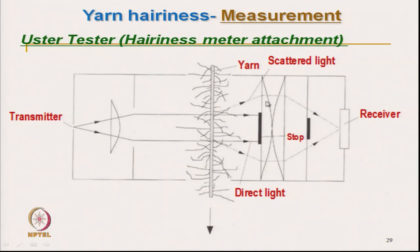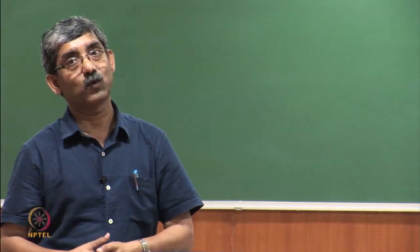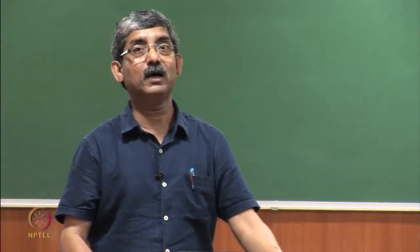The size of the block is equal to or slightly larger than the diameter of the aperture. If hairs are present, the hairs will start scattering the light. The scattered light moves away from the straight path, gets captured by the light capture system, and is projected to the receiver. The amount of light the receiver receives is proportional to the number of hairs.